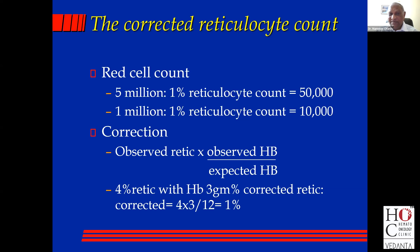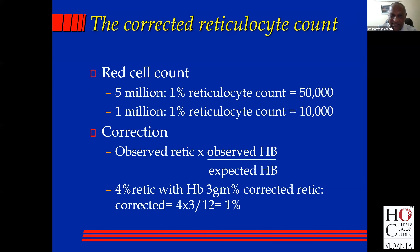With a 1 million red cell count and a 1% reticulocyte — which is the same percentage — the absolute reticulocyte count is only 10,000. So you must have this concept of the absolute count in your mind. This applies to red cells, to reticulocytes, to white cells. In white cells, for instance, we like to talk about the absolute neutrophil count, because that's what guides our assessment of the severity of neutropenia.